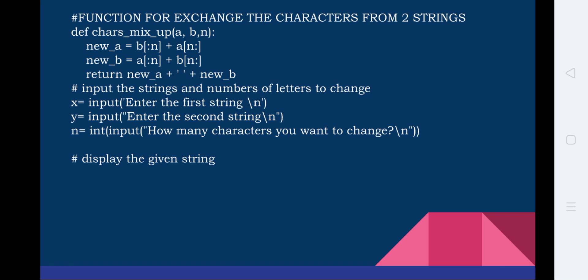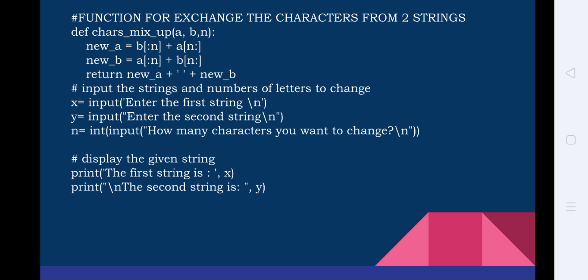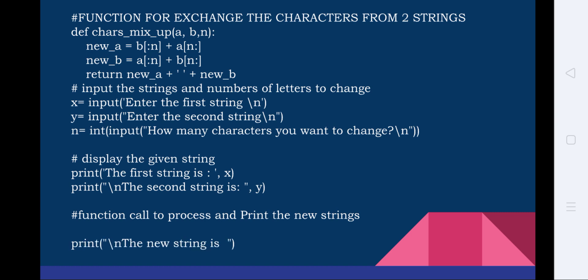The next hash statement displays the given strings. Once the strings are received, they are printed on screen: `print('The first string is:', x)` and `print('The second string is:', y)`. The backslash n gives a new line wherever it occurs, moving the cursor down — just like pressing Enter on the keyboard. Finally, the function is called and the new string is printed: `print(char_mixup(x, y, n))`.